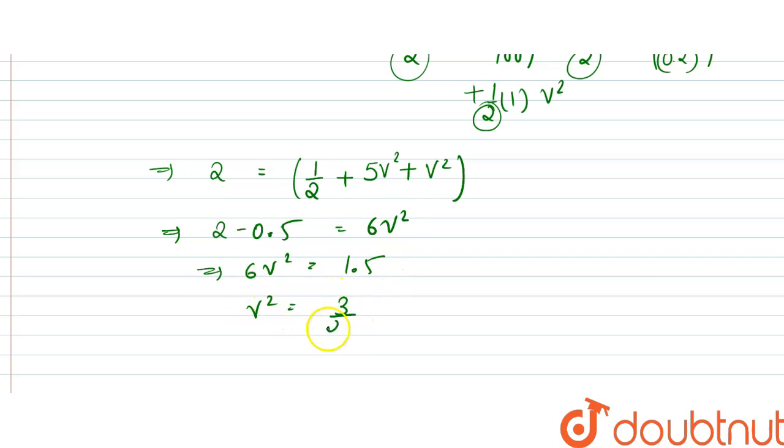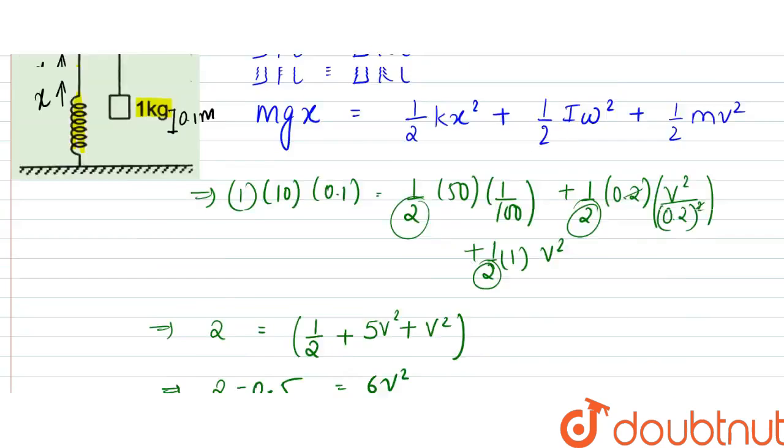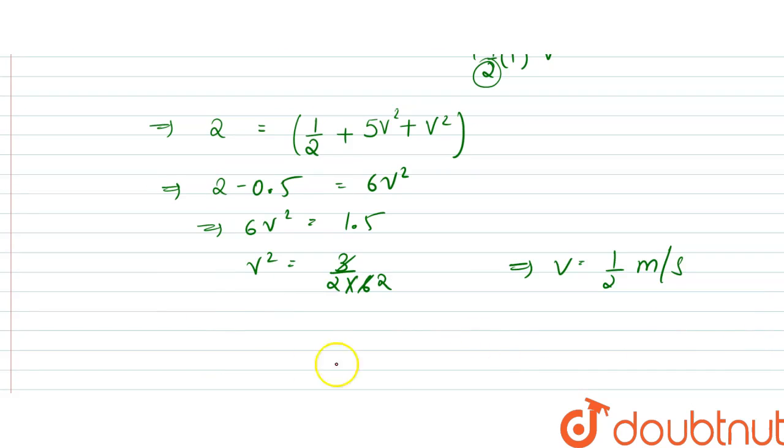v square from here is equal to 3 by 2 into 6, so this and this is cancelled, so v from here is half meter per second. So that is the speed of the block. So we can write that speed of block v is equal to half meter per second or 0.5 meter per second. Thank you.